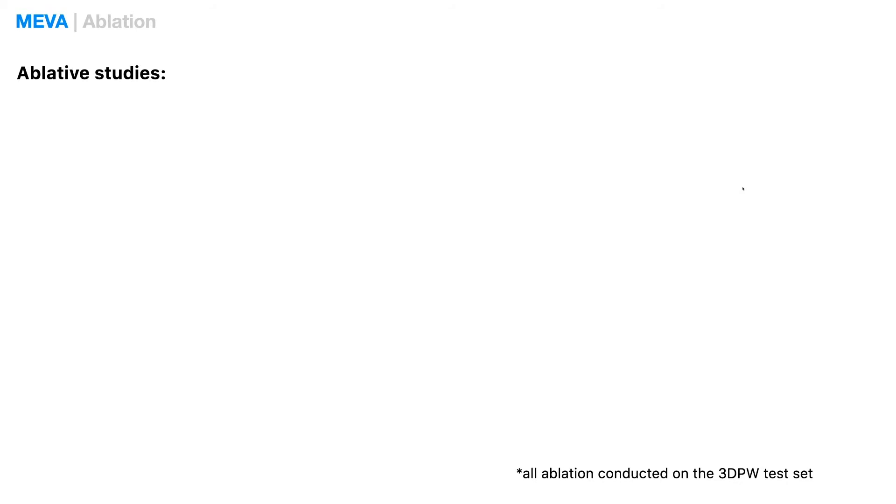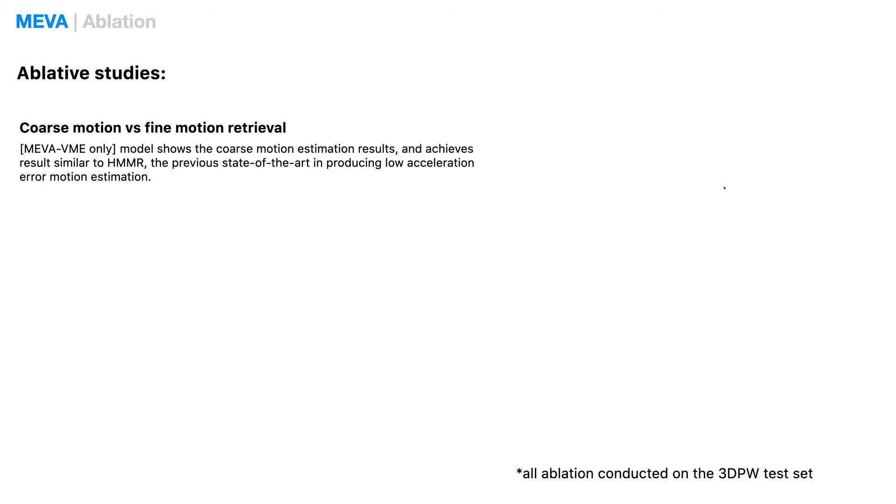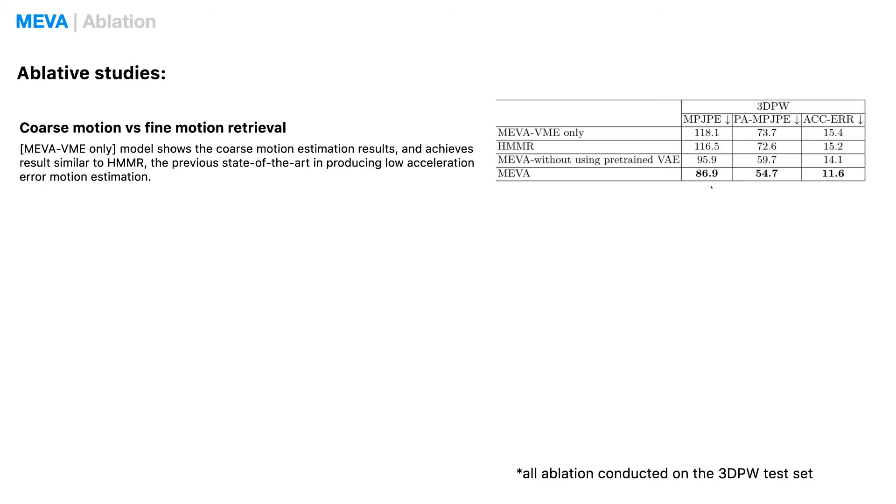To better verify the effectiveness of our method, we conduct extensive ablation studies. First, we study the coarse-fine breakdown of human motion. MEVA benefits from an explicit breakdown of coarse and fine motion using a temporal compressive step that captures the overall motion from a video. But just how much motion is recovered in this coarse step?